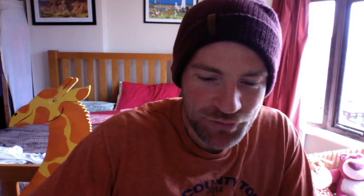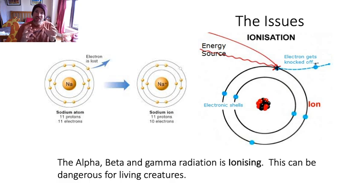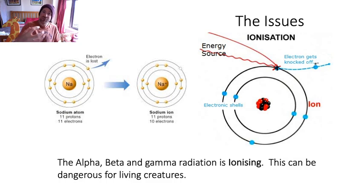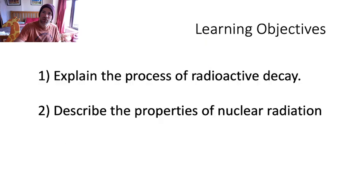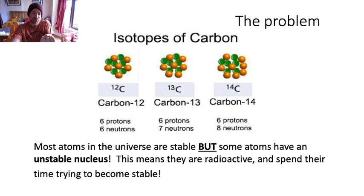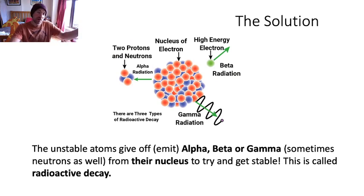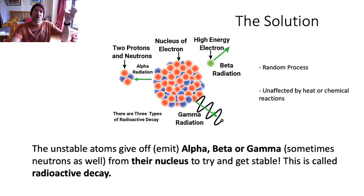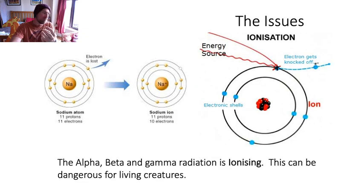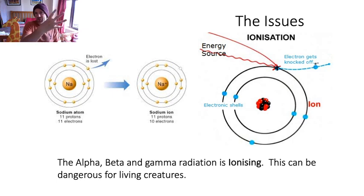We've done about half an hour of quite intense learning. I'm going to take any questions from the chat. You should have notes about: the problem - some nuclei are unstable; the solution - they give off alpha, beta, or gamma to become stable; what those three things are; and the problem of ionization. Those are the fundamentals of radioactive decay and ionizing radiation.